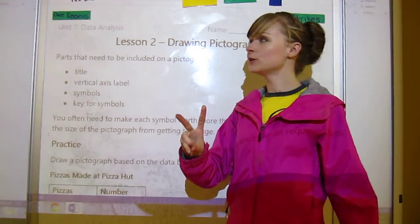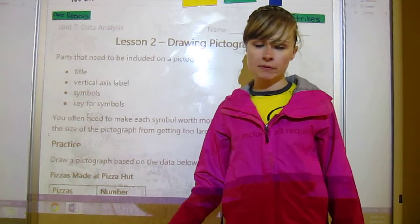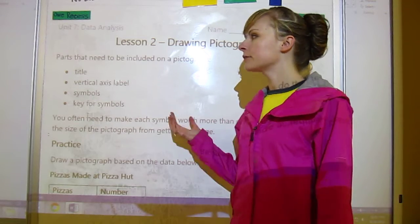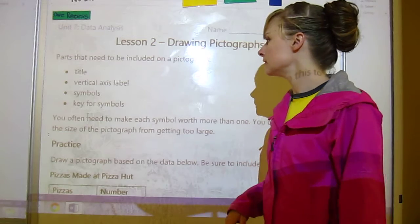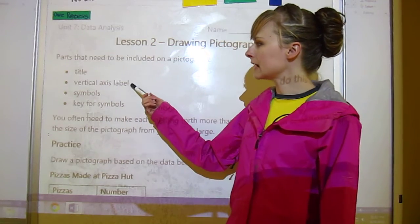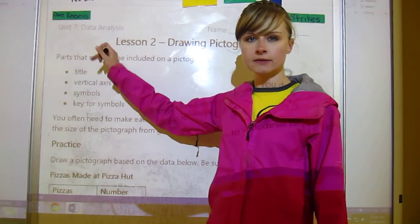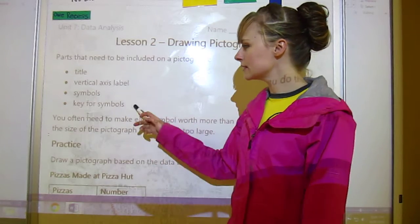Hello, this is lesson two of data analysis and this is all about drawing pictographs. Last lesson we learned how to read pictographs, now we're going to draw them. Let's review the parts of a pictograph that need to be included: you need to have a title, you need to have vertical axis labels, you need to have symbols, and you also need to have a key to tell us what the symbols represent.